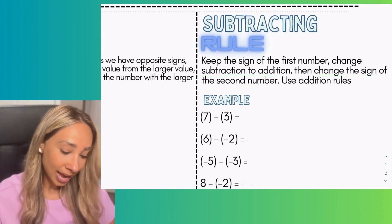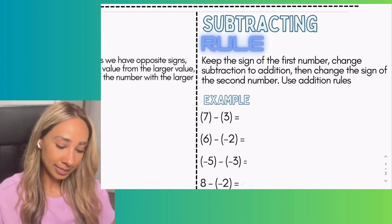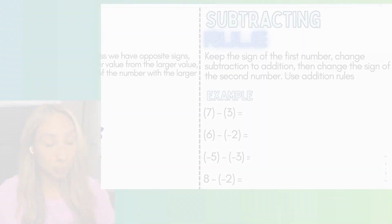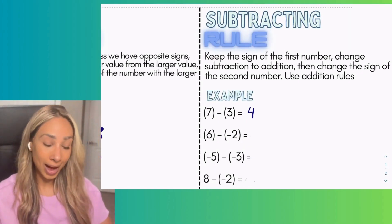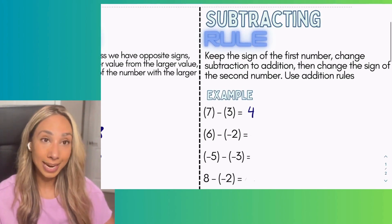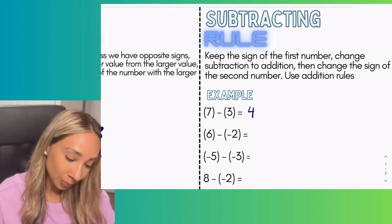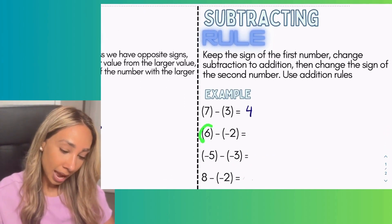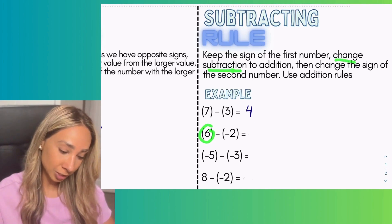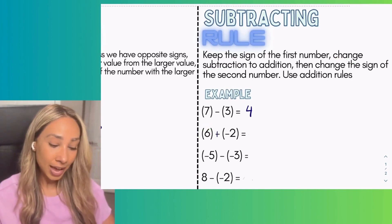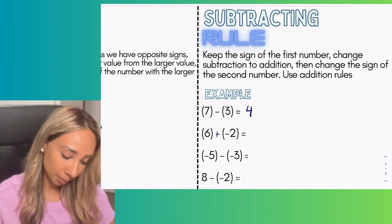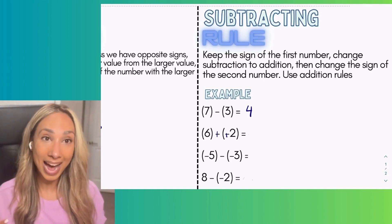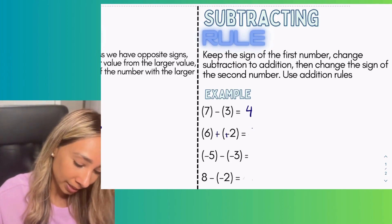So if I go seven take away three, that's normal subtraction with integers — that just leaves me with four. In the next example, I have six and I'm taking away negative two. I keep the sign of the first number, change subtraction to addition, and flip the sign of the second number. Now I have six positive things adding two positive things, which leaves me with eight.